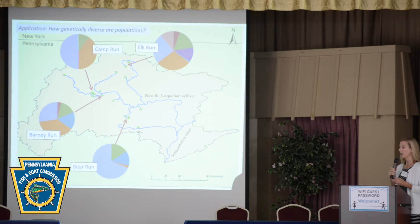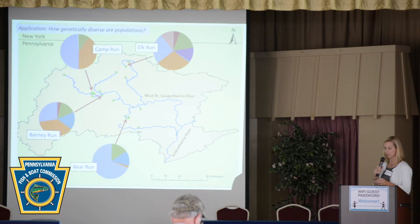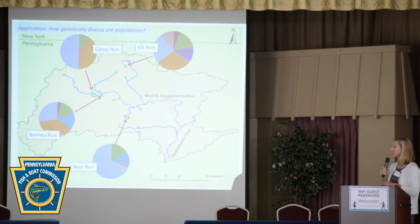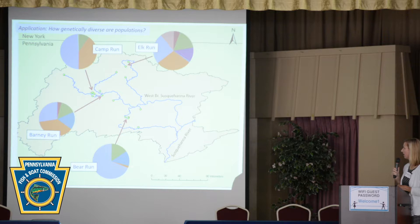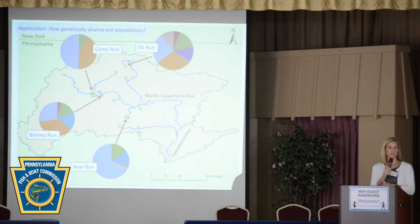Looking at results from a single genetic marker — though we actually pull results from multiple markers to make inferences about populations — we can see Elk Run has the most diversity of all four sites. A lavender/light purple color is present in all populations, but the proportion of those genes in each population changes quite drastically. Bear Run has the least diversity of all populations. We can take this information back to managers, look at the habitat, and ask: is Bear Run really small? Is it potentially isolated? Why might there be less diversity there? So we can use this as a first step to look more holistically at broader impacts affecting genetic diversity.